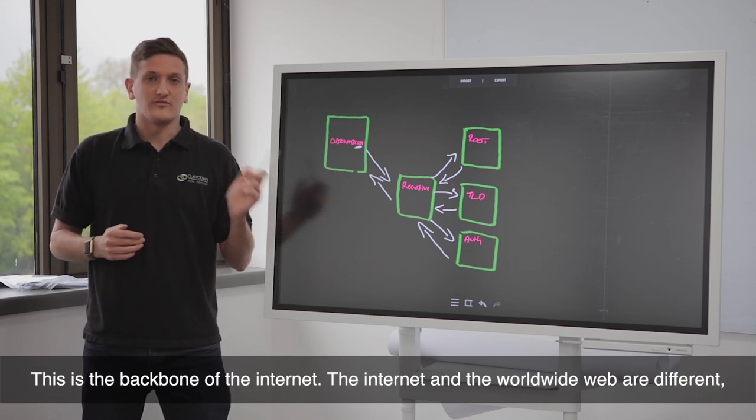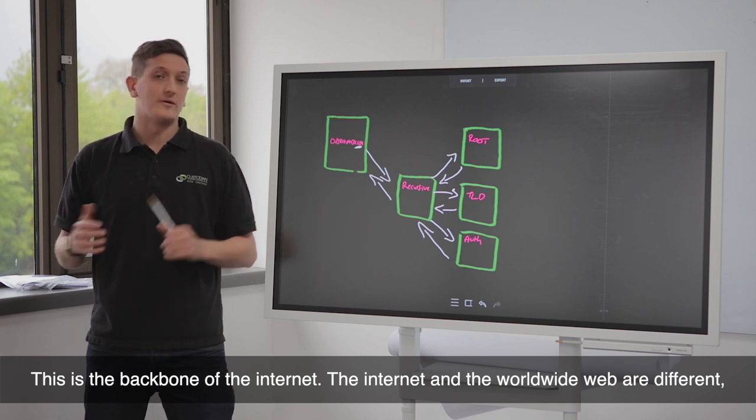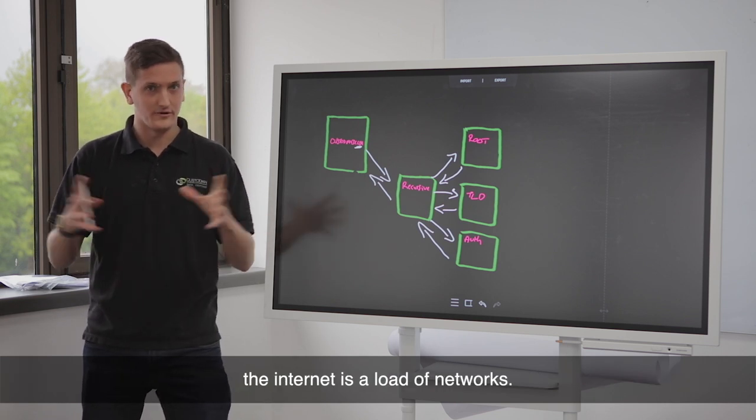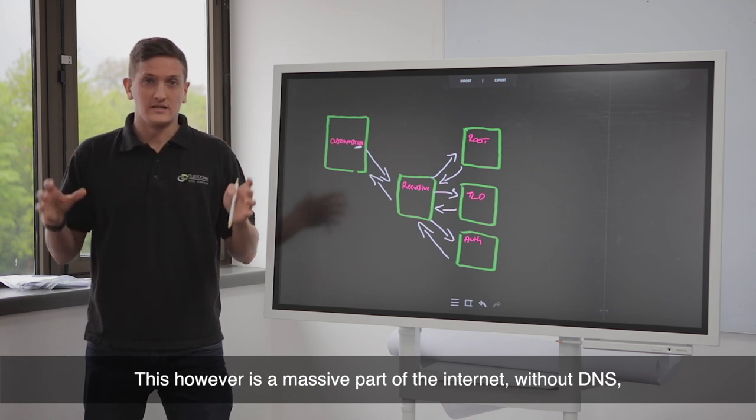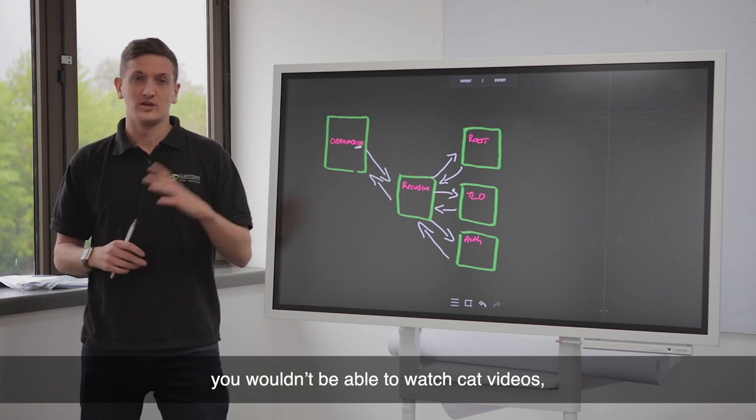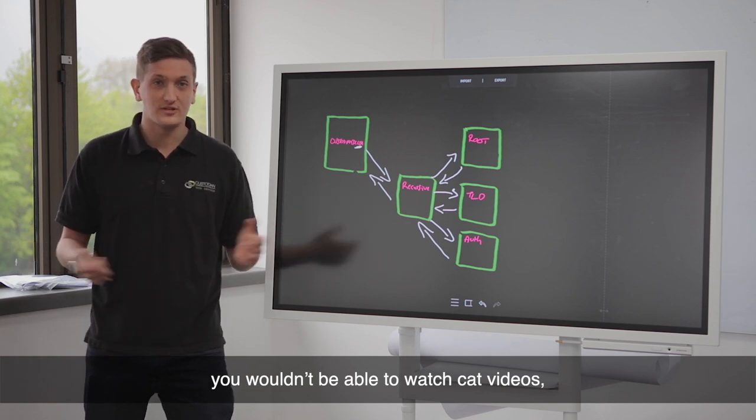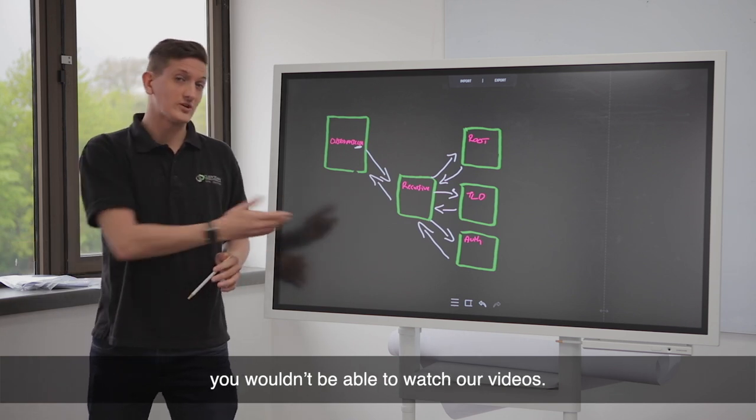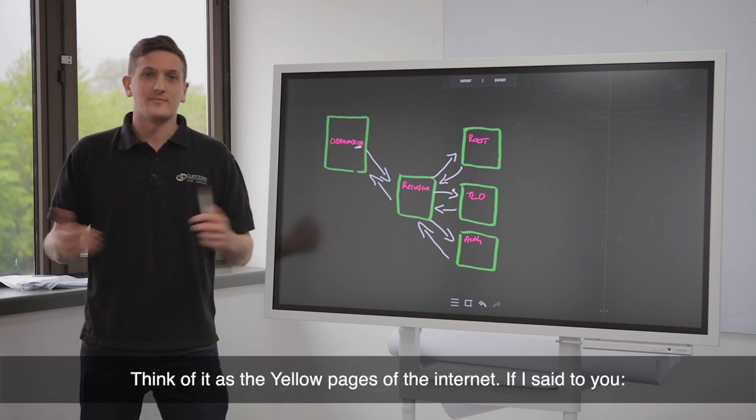So this is the backbone of the internet. The internet and the World Wide Web are different. The internet is a load of networks. This, however, is a massive part of the internet. Without DNS, you wouldn't be able to watch your favorite cat videos. You wouldn't be able to watch our videos. You wouldn't be watching this.